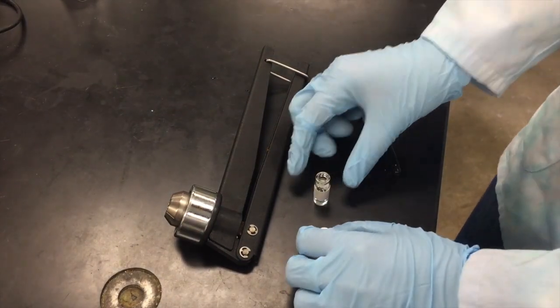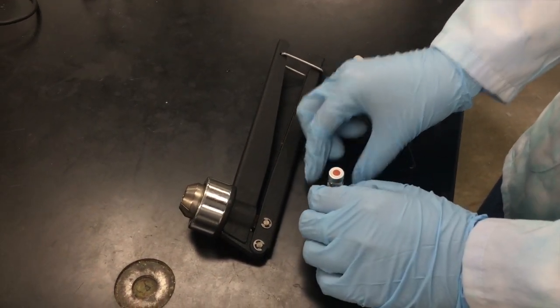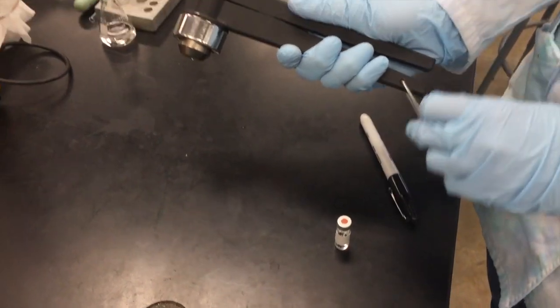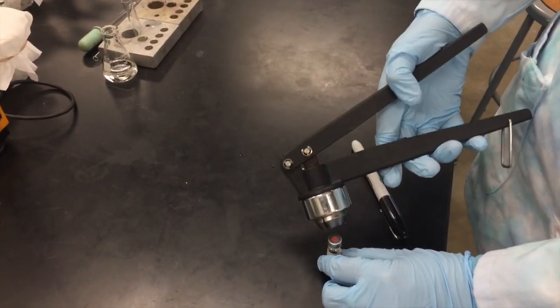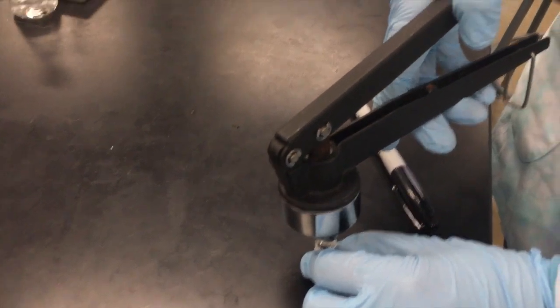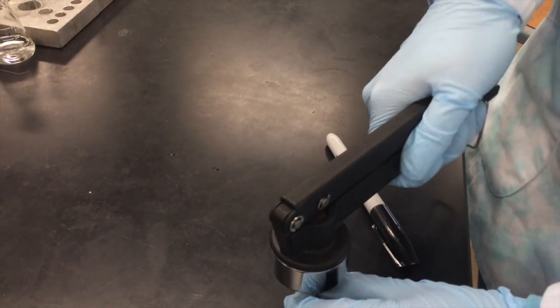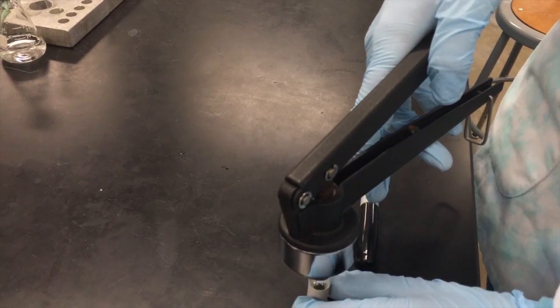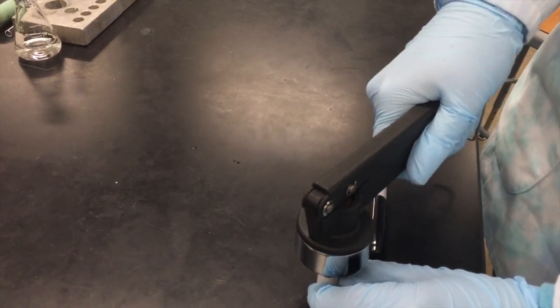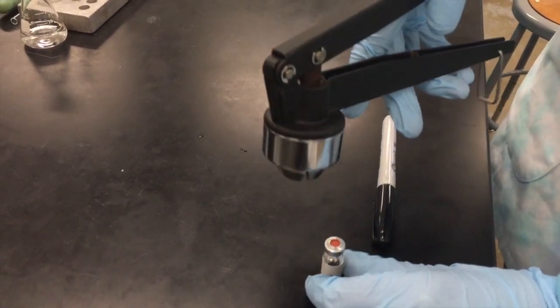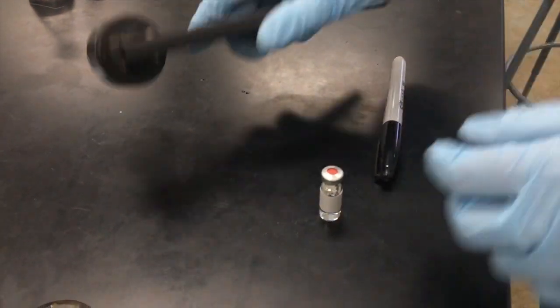Place the cap onto the vial and tighten the cap by crimping it. Turn the vial one quarter turn and crimp again. Be sure the cap is securely fastened.